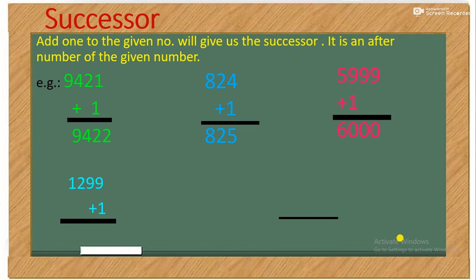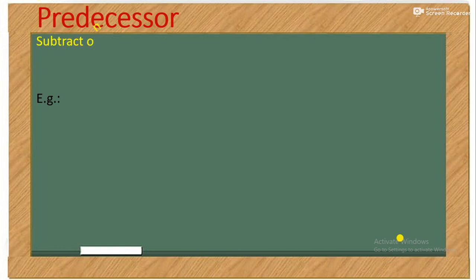1299 plus 1 equals 1300. 9999 plus 1 equals 10,000. One less than a given number is its predecessor. It is a before number of the given number.